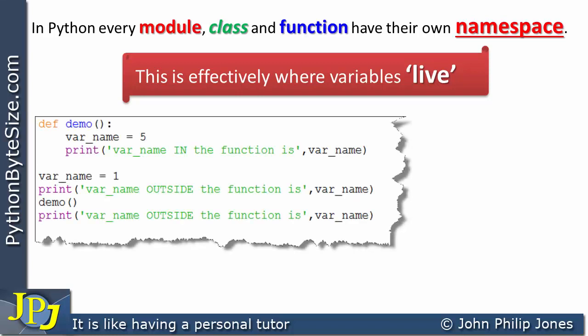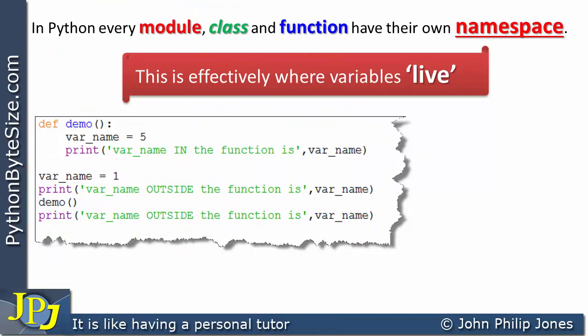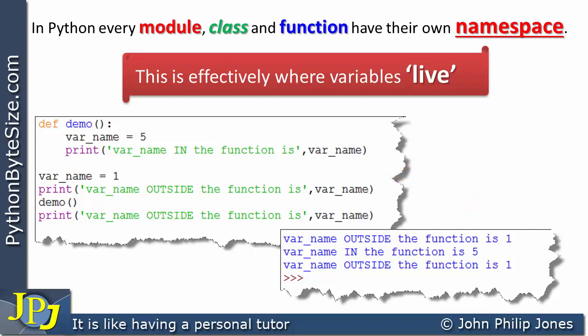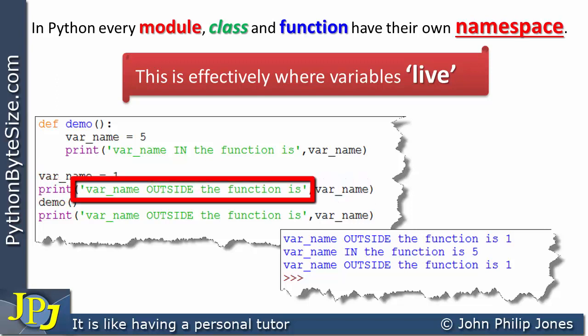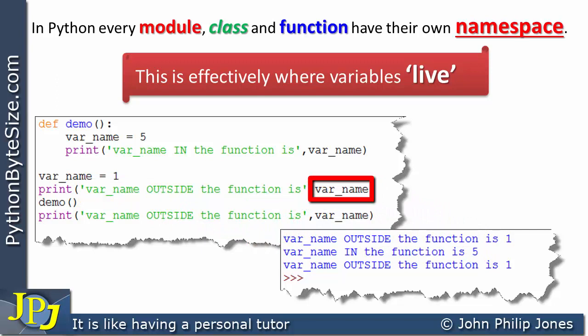Let's consider the following program, which has a function and four program statements. I'm going to do a trace of this program and see what actually happens. The first thing to execute is var_name assigned 1. That creates an instance of the integer class with the value 1. The next line prints var_name outside the function as a string, which gains access to the value of the integer — set to 1 — so it displays 1.